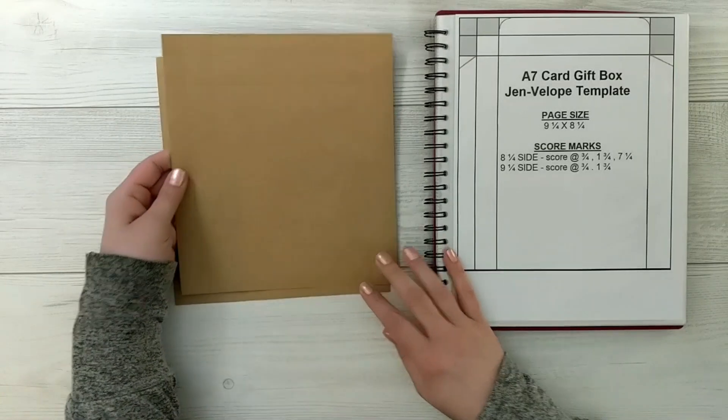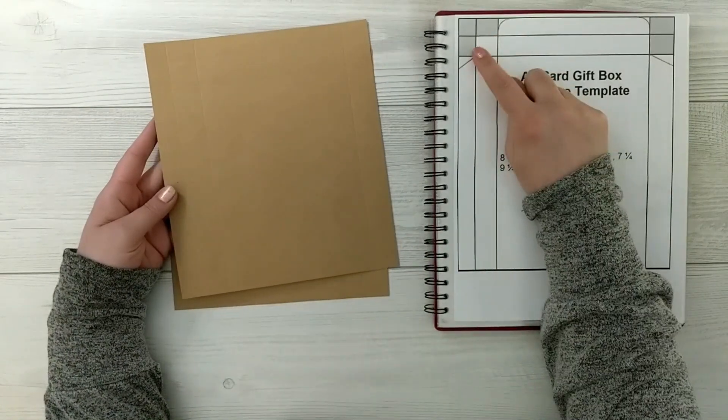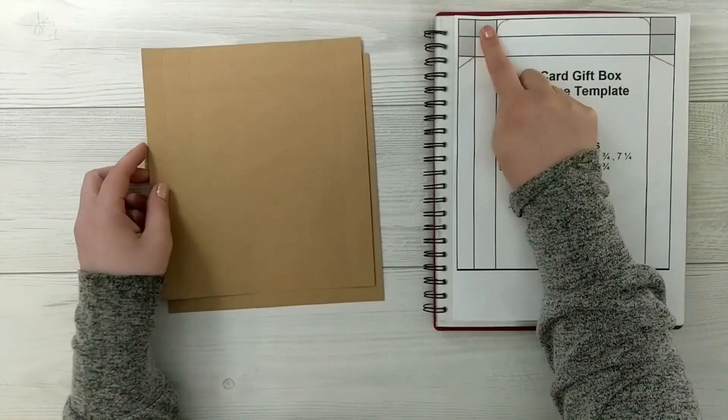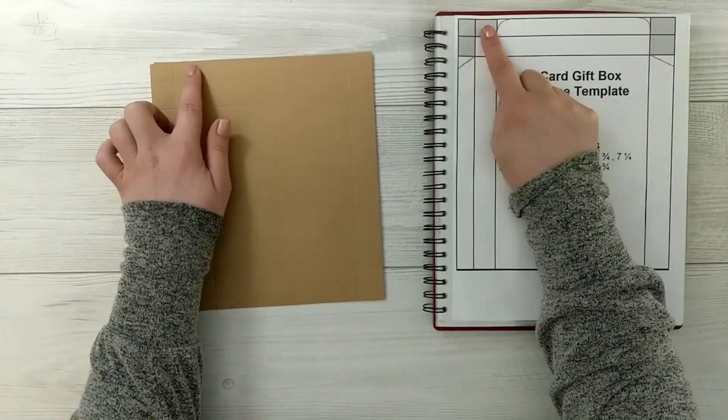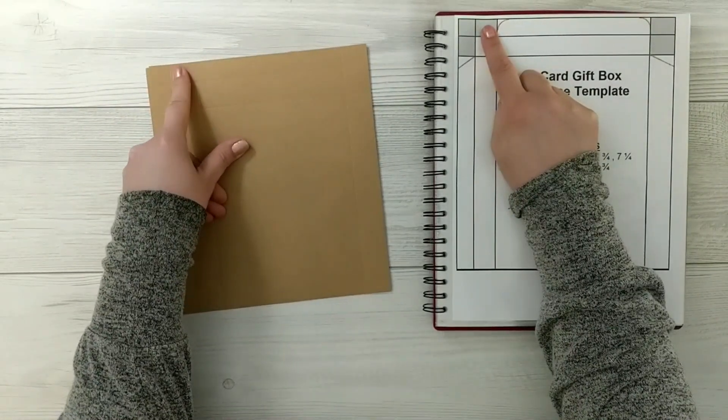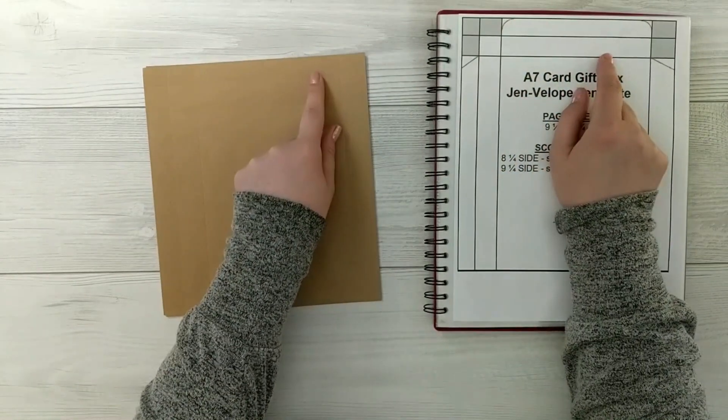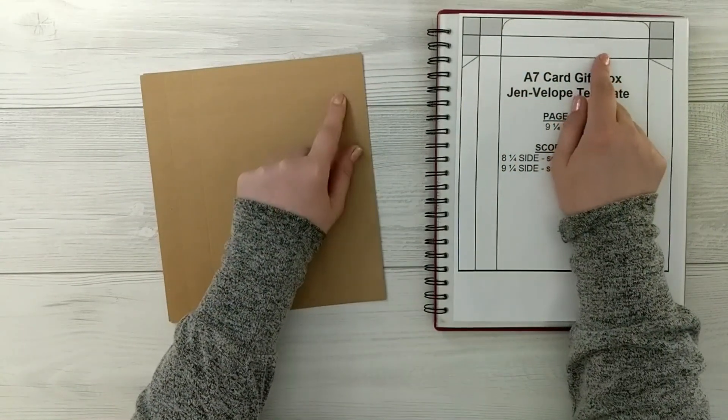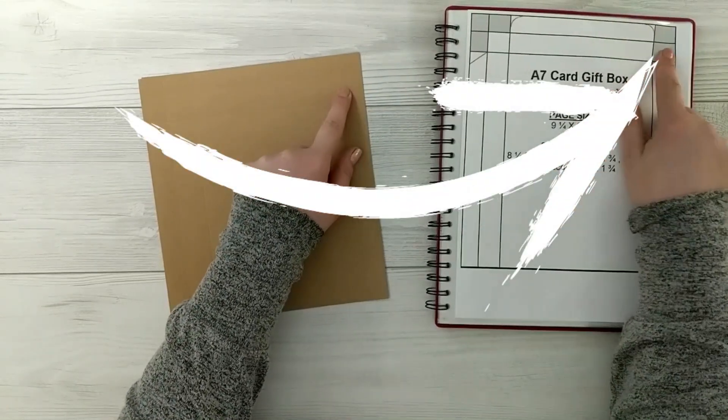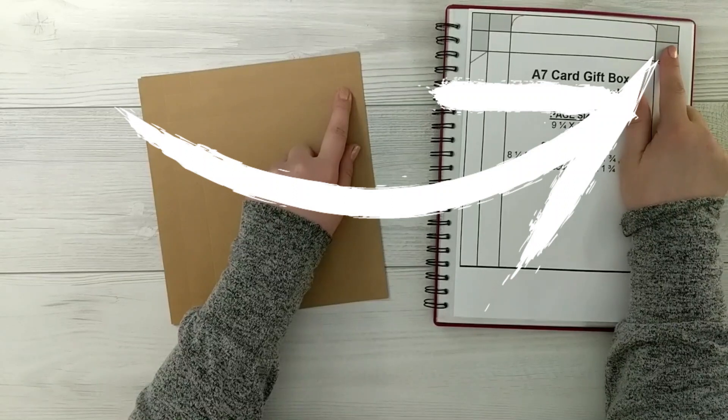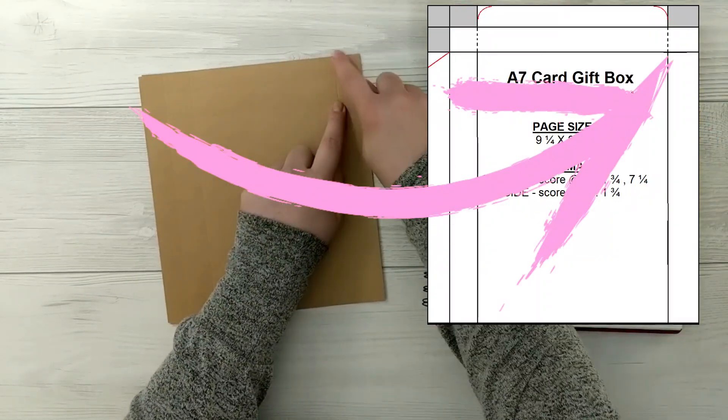So you'll notice on my template on the screen here there are some grayed out areas. My template has an error on it but yours won't. So you'll notice the difference. I'll show you as I cut it where I realized my error in my template on screen, but it doesn't matter as long as you cut the way that I'm showing you and follow your template when you download it.